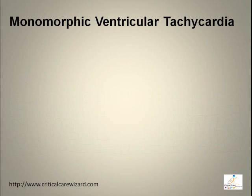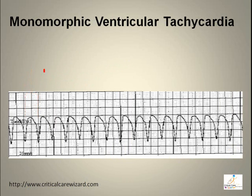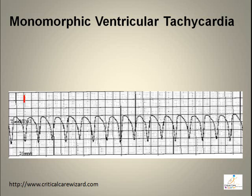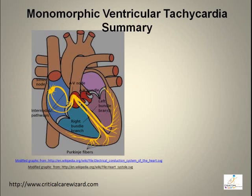Monomorphic ventricular tachycardia features a regular pattern and shape with no discernible P wave, a rate more than 100 beats per minute, and a wide QRS complex with identical shape. Monomorphic ventricular tachycardia originates from one specific focus of the ventricular muscles.